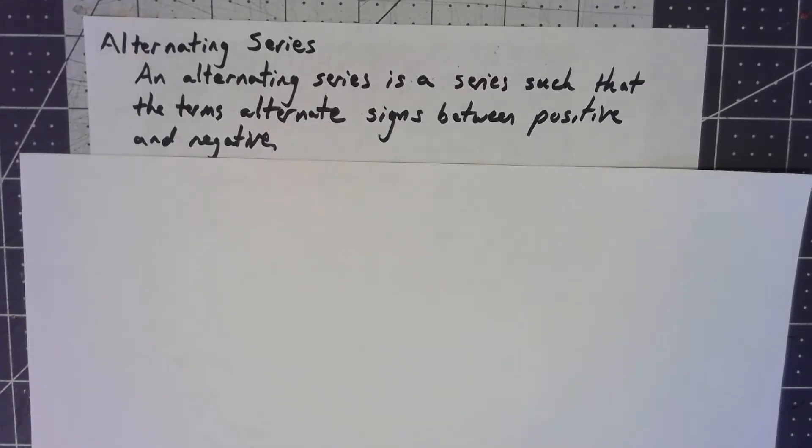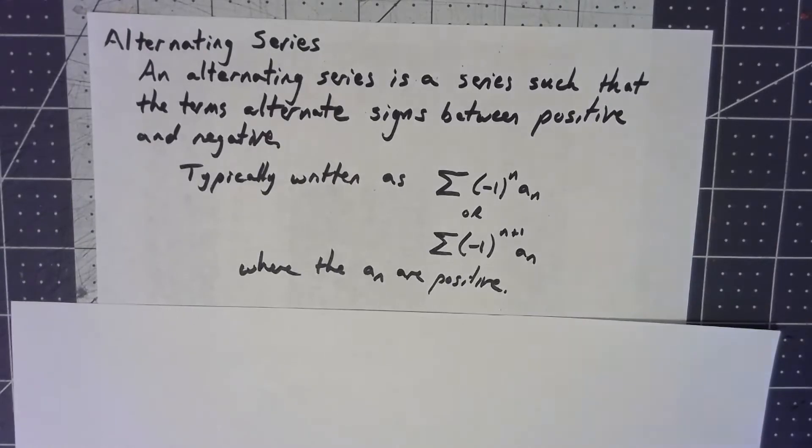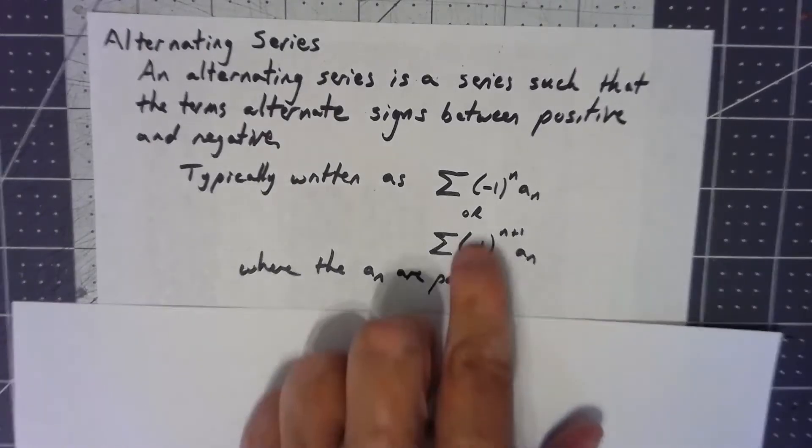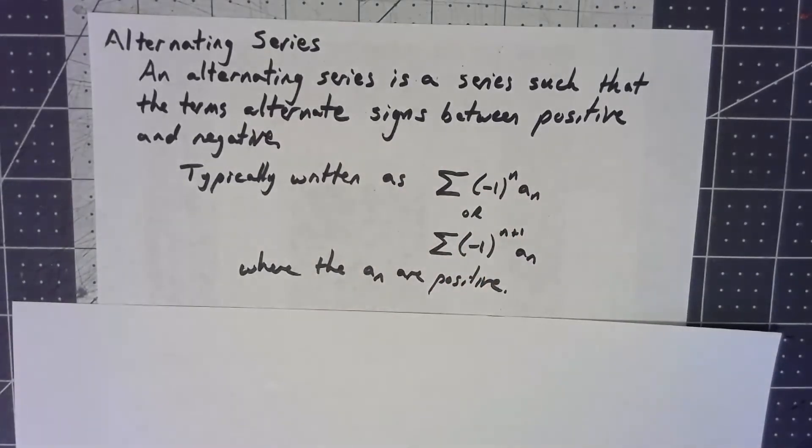That means that things tend to go towards zero a little bit easier than they do otherwise. Typically, one of these things is written, it will have either a negative one to the n or a negative one to the n plus one factor in the terms, because that's what makes it go back and forth between positive and negative.